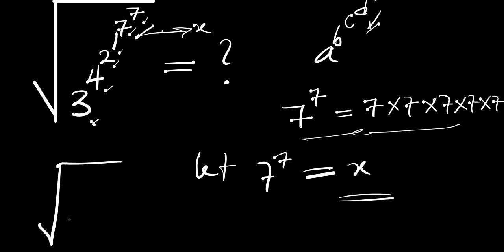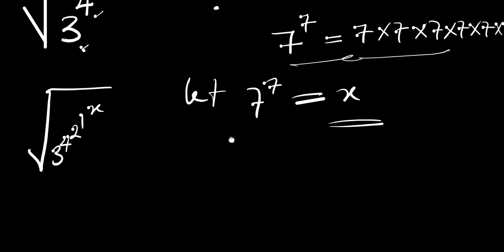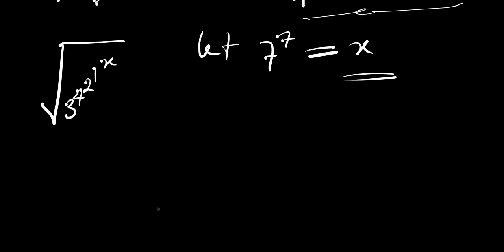So we are going to have the square root of 3 power 4 power 2 power 1, and 7^7 is now x. The next thing we are going to do is consider 1 power x. We have 1^x, and this simply equals 1, because irrespective of the value of x we are still going to have 1. So we are going to replace that place with 1.